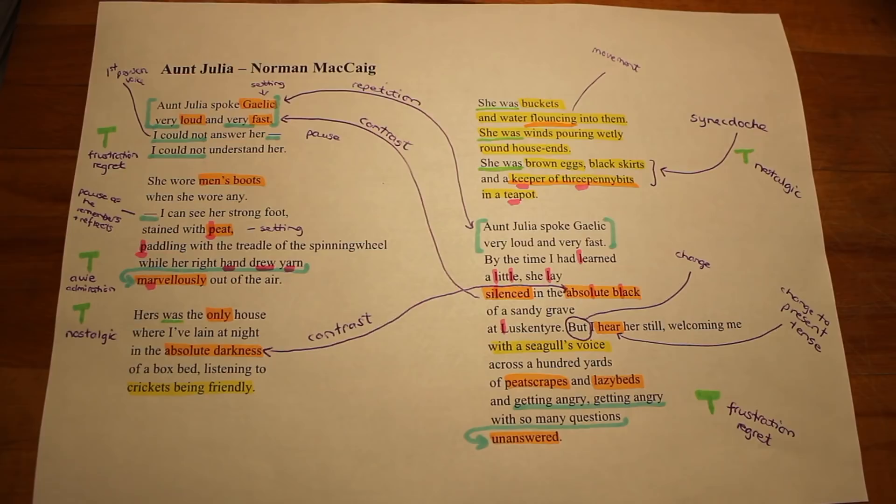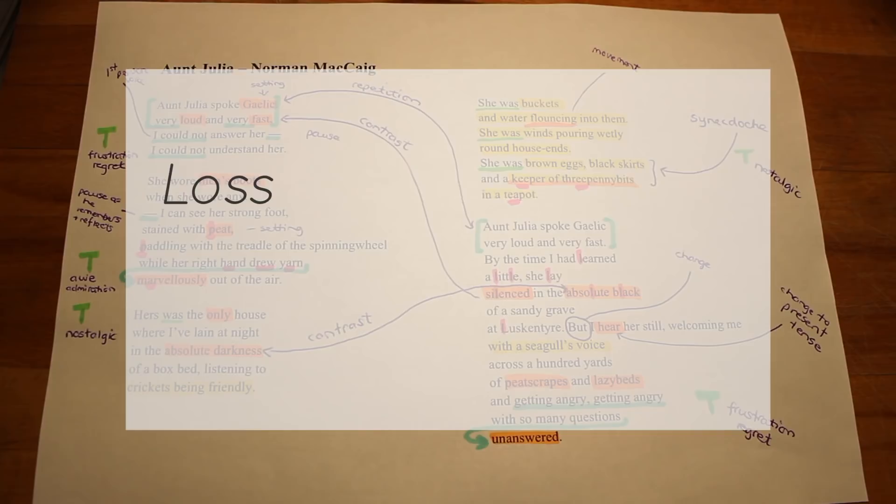In his poem Aunt Julia, Norman MacCaig explores the themes of loss, not only of a person but also of Scottish culture, isolation and relationship.